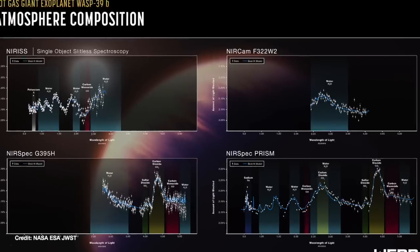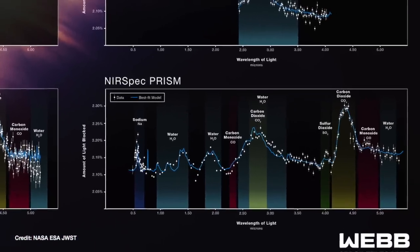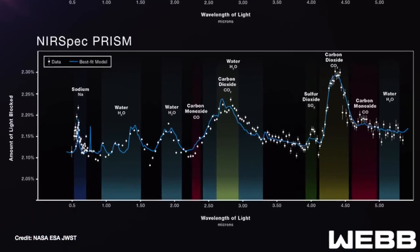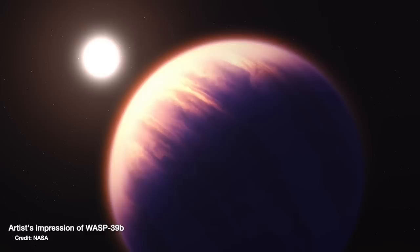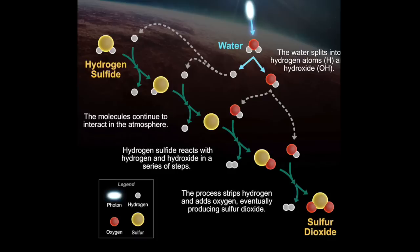This week on my channel I posted a video about the recent JWST results revealing a detection of sulfur dioxide in the atmosphere of the exoplanet WASP-39b — a molecule that can only be made in a planet's atmosphere by photochemistry, chemistry triggered by starlight itself.